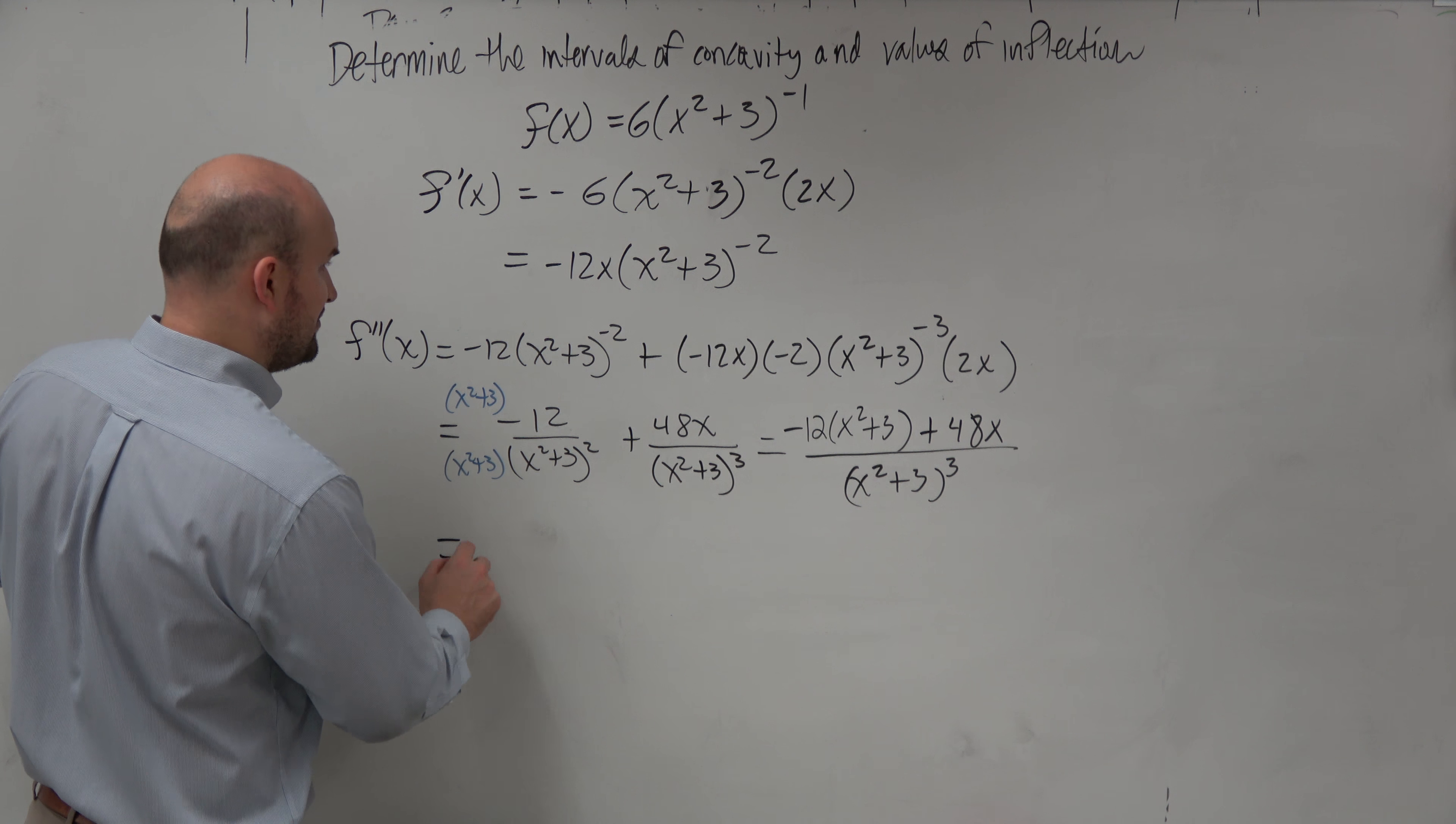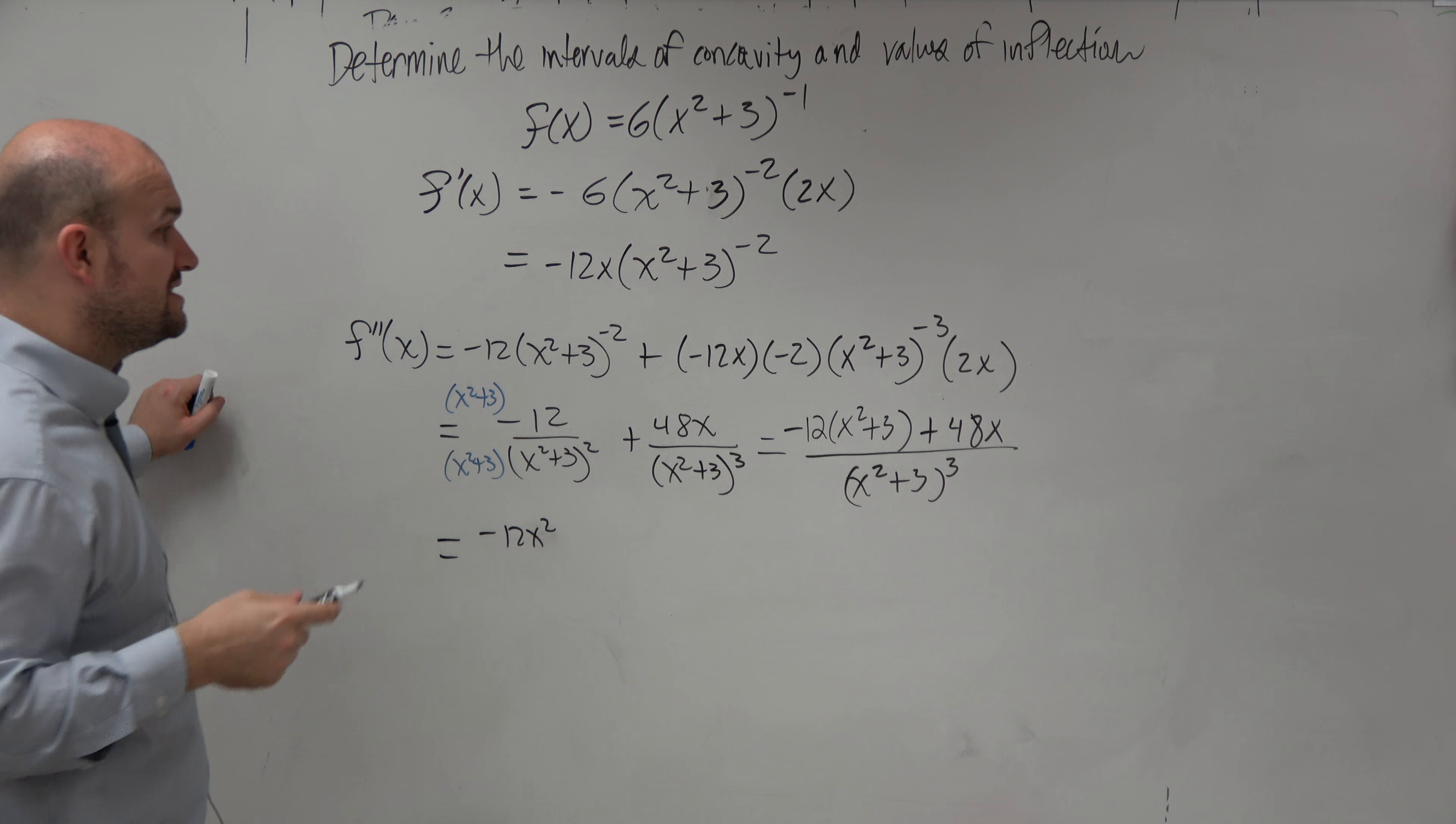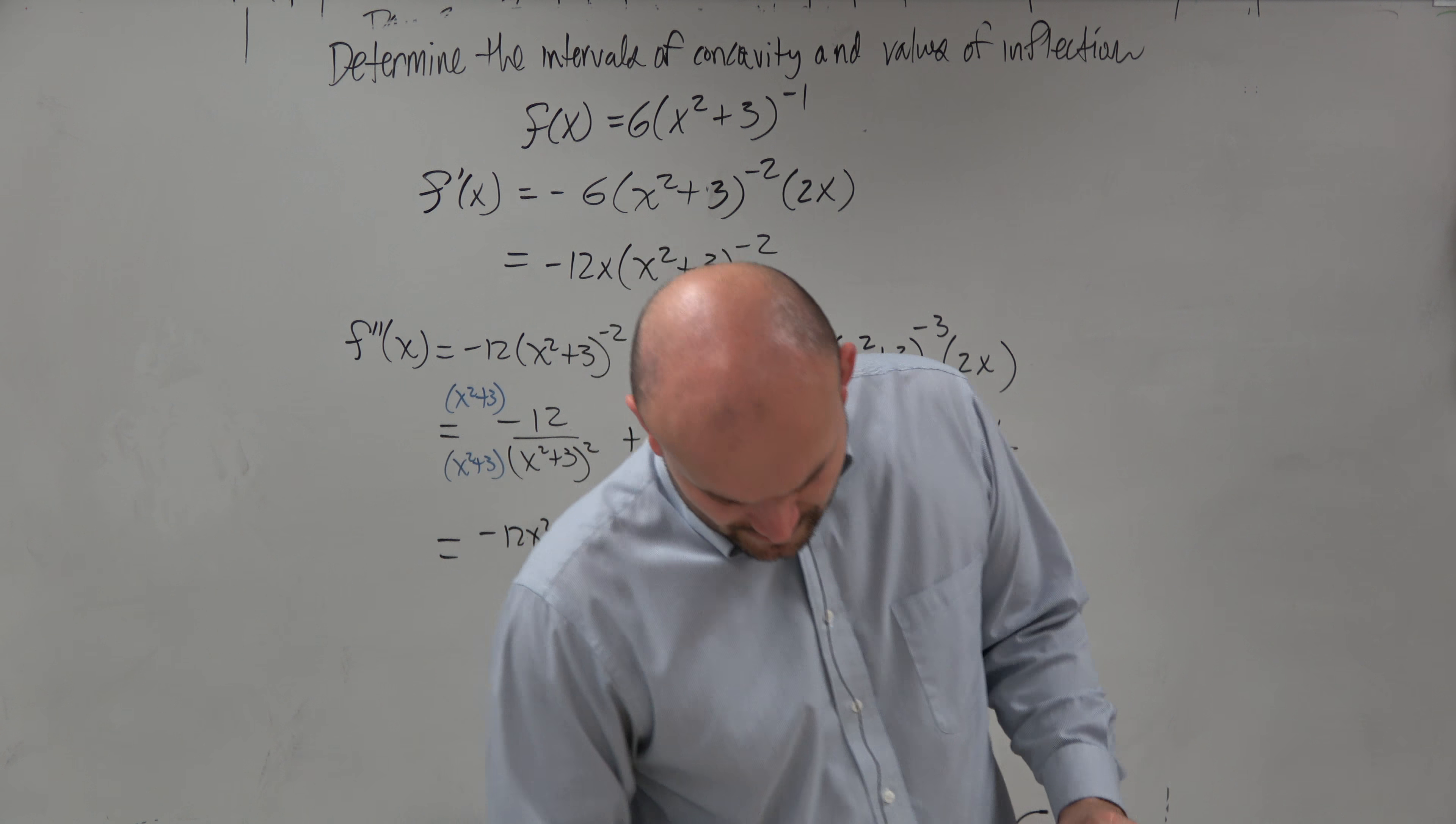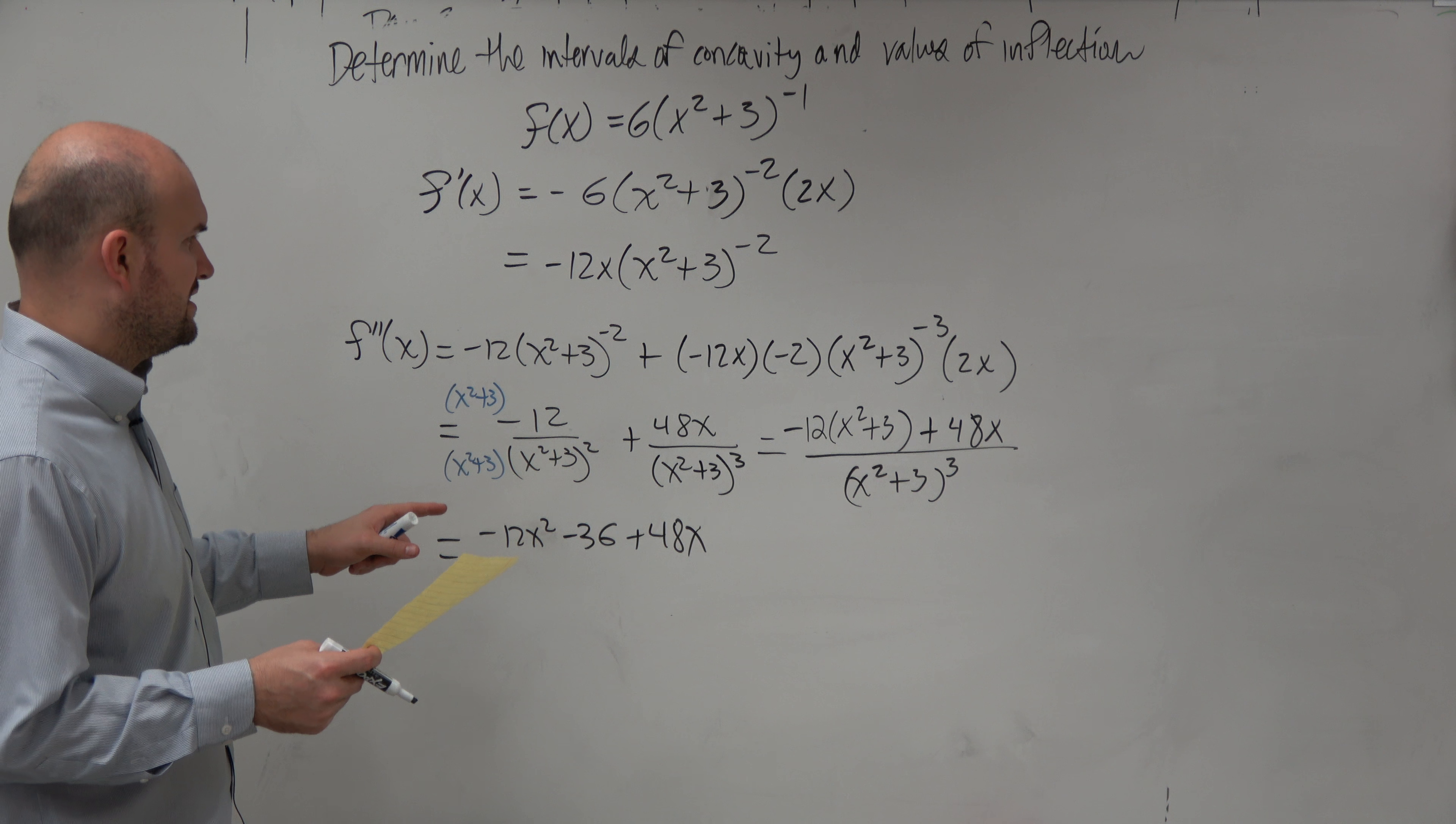By doing a little math here, simplifying this, I get negative 12x squared. That's negative 36, and then plus 48x squared. I don't recall that was exactly what I had before.